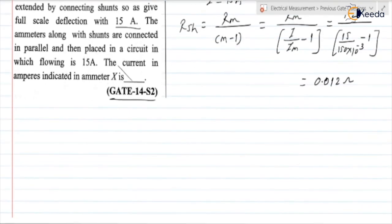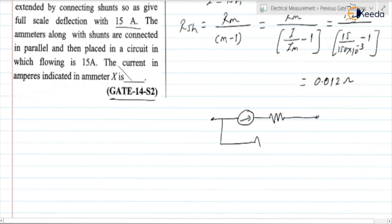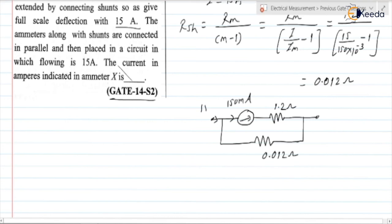So ammeter X has an ideal meter with meter resistance 1.2 ohm and shunt resistance 0.012 ohm in parallel. The meter current is 150 milliampere and the total current through the branch is 15 ampere. This is the emitter X circuit. Now similarly we need to find the shunt for ammeter Y.